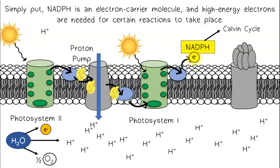NADPH carries these electrons to the Calvin cycle to power reactions. Simply put, NADPH is an electron carrier molecule, and high-energy electrons are needed for certain reactions to take place.